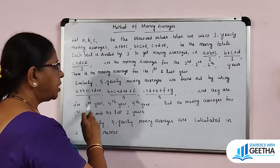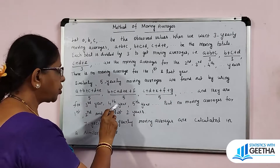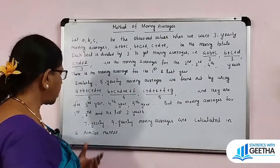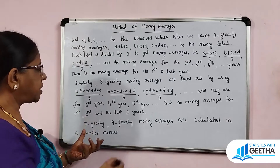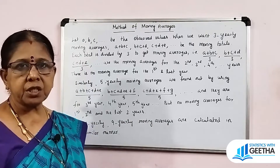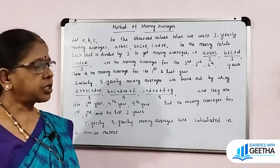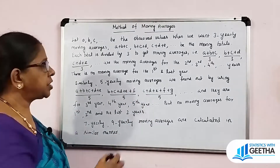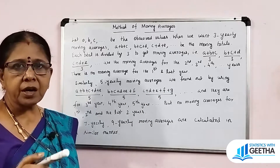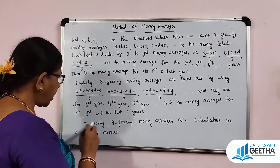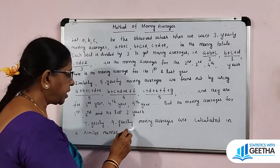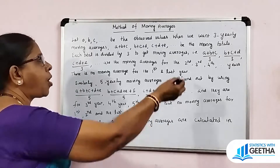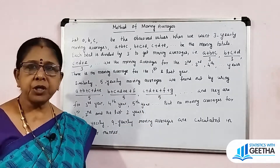For 5-yearly moving averages, the moving averages apply from the 3rd year, 4th year, 5th year, etc. Moving averages will not be there for the 1st and 2nd year, and also not for the last 2 years. In the same pattern, we calculate 7-yearly and 9-yearly moving averages for odd number of years.